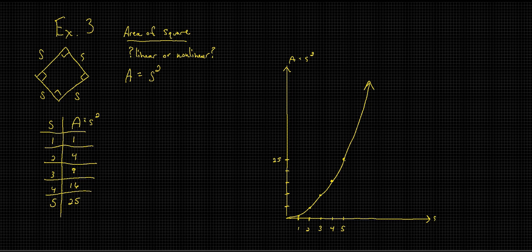Anytime you have one of the variables taken to a different power and the other one not taken to anything greater than a degree of one, it's not going to be linear. In this case it's actually not only nonlinear, but as we'll learn in the next section, it's actually quadratic because the input variable, the independent variable—in this case the side length—is being squared.